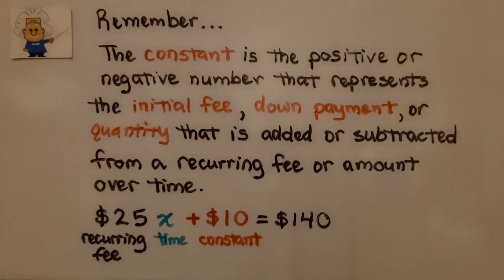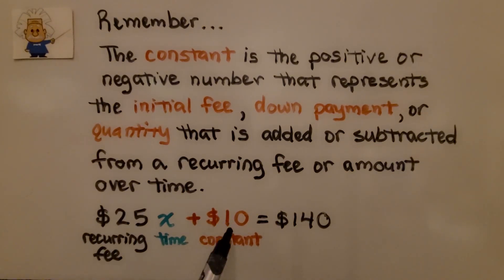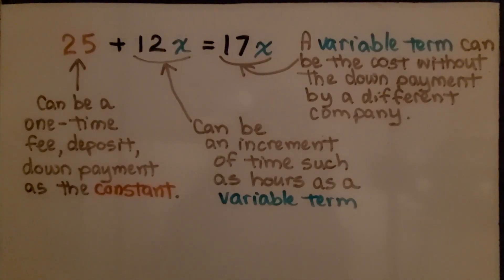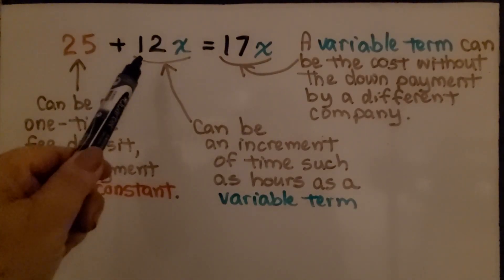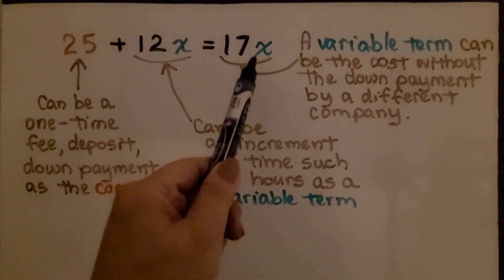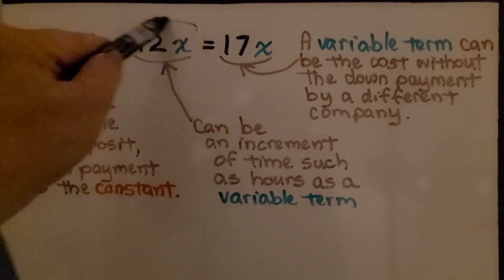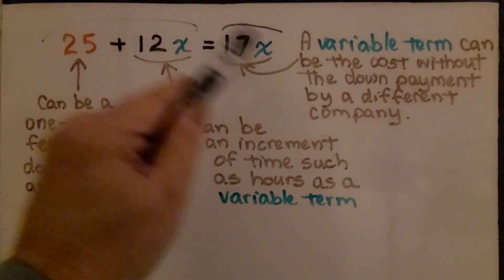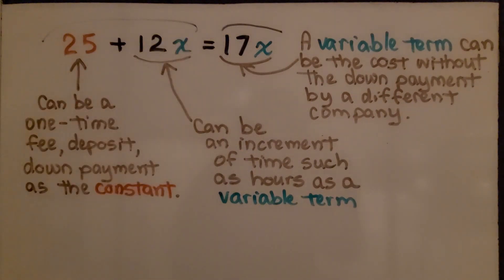So remember, the constant is the positive or negative number that represents the initial fee, down payment, or quantity that is added or subtracted from a recurring fee or amount over time. We have our constant. We have a variable term with that constant. Then we have another variable term on this side of the equal sign and this is compared to this as two different companies or two different situations.